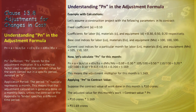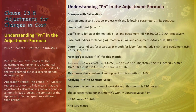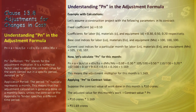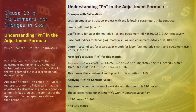Suppose the contract value of work done in this month is 10 crore rupees. The adjusted value equals contract value × PN: Adjusted value = 10 crore rupees × 1.169 = 11.69 crore rupees. The adjustment to 11.69 crore rupees reflects the recent market changes in labor, materials, and equipment costs, ensuring that the contract price remains fair and in line with current economic conditions. This calculation demonstrates the importance of Clause 13.8 in maintaining financial equilibrium in the contract, protecting both contractors and employers from significant market fluctuations.